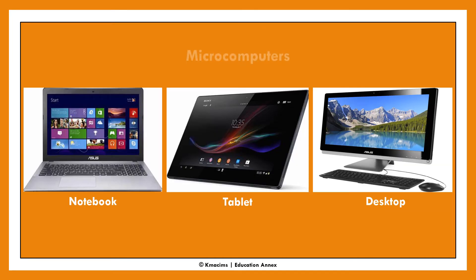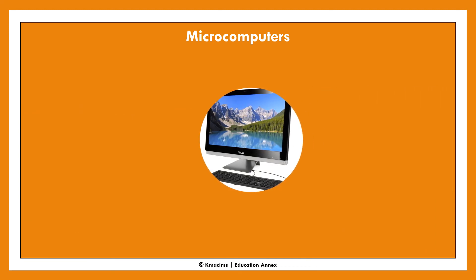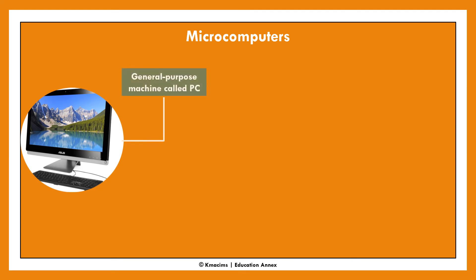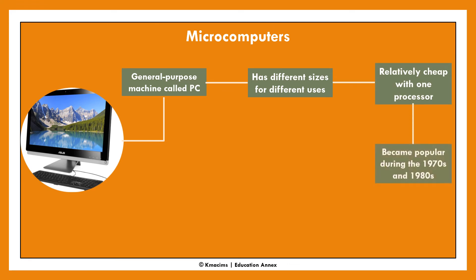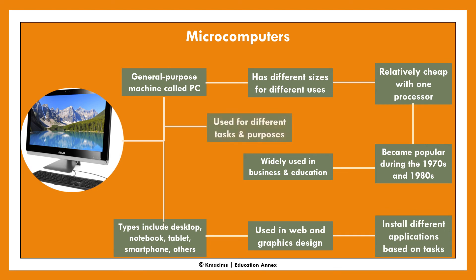Microcomputers are generally called personal computers and they are primarily used by individuals in workplaces and homes. They are smaller in size, relatively cheap, and have essential processing units. Their popularity can be traced to the 1970s and 1980s, and since then the size of a microcomputer has continued to diminish. There are different types of microcomputers including desktops, laptops and notebooks, tablets, smartphones, smart TVs, smart watches, and smart refrigerators. A microcomputer is a general-purpose machine that can be used to perform different kinds of tasks depending on the software installed.